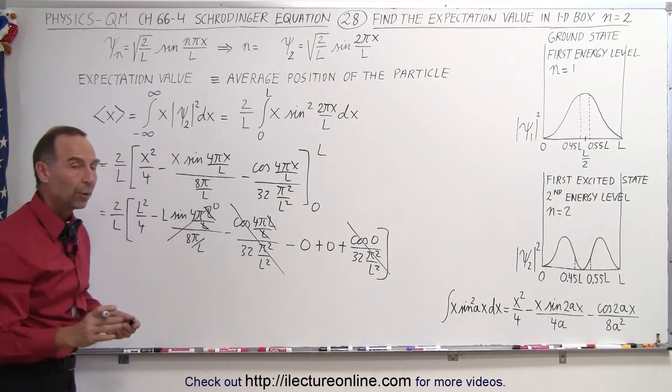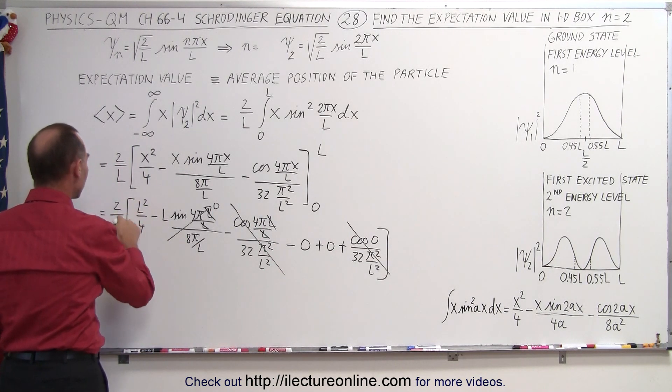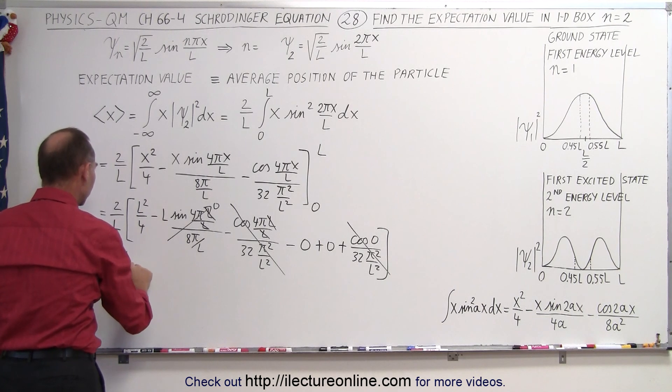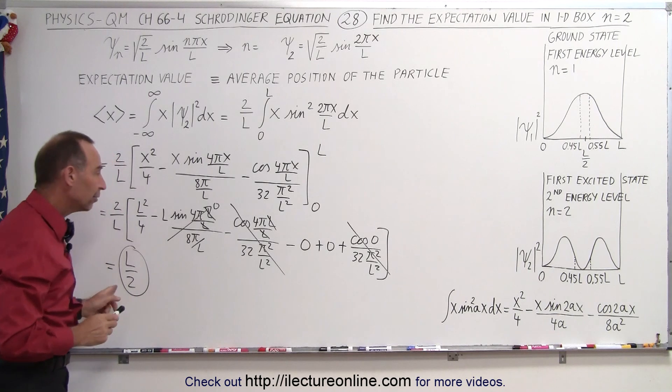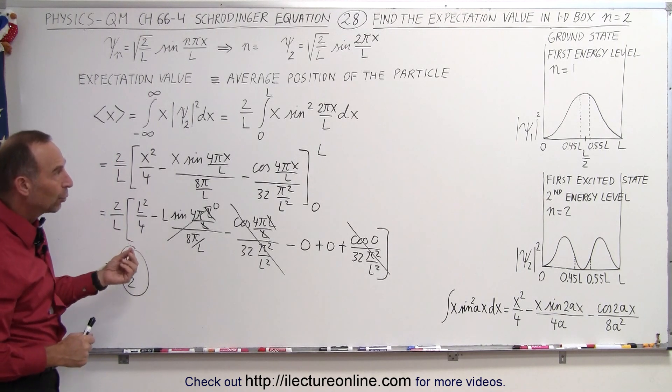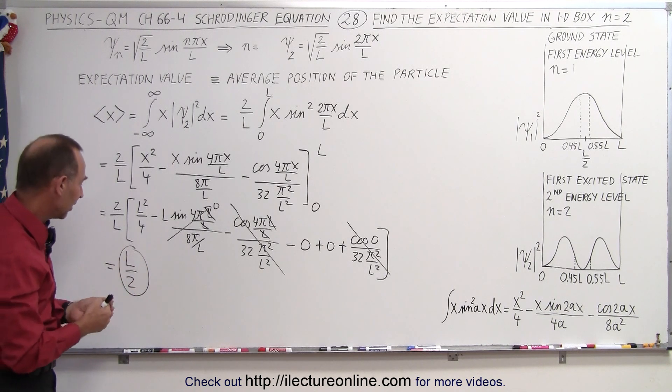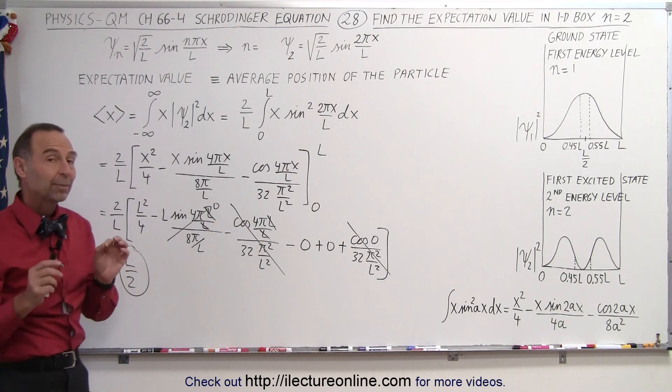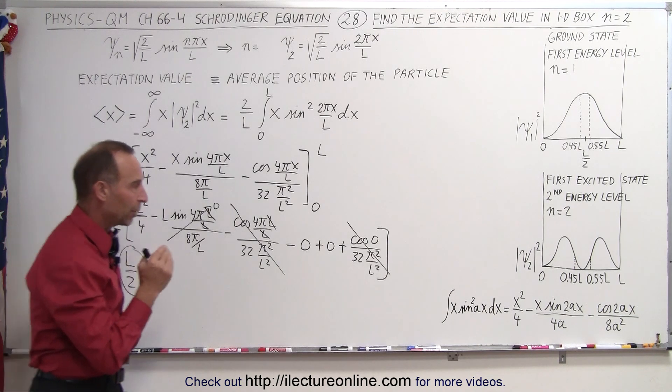Which means that no matter what the value for n is, we always end up with just this term times 2 over l, which means it's l divided by 2. So you can see that no matter what—n equals 1, the first energy level or ground state, the first excited state, the second excited state, no matter what—the expectation value for the position of a particle is always going to be smack right in the middle.